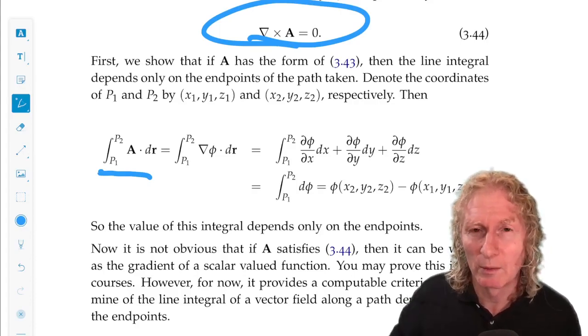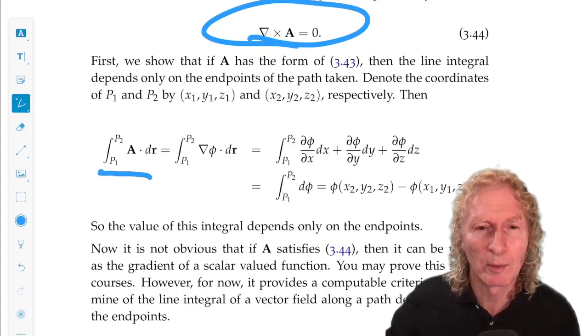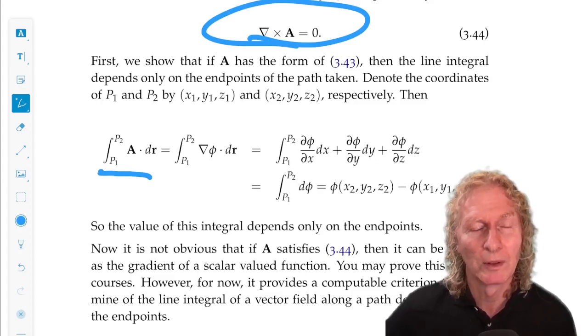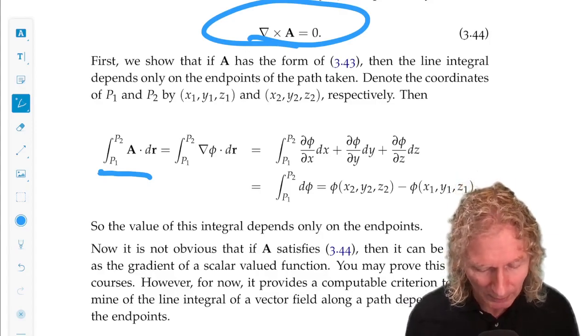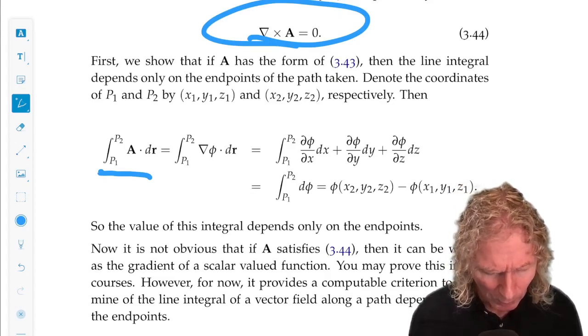And if you read what I said about the art of computing the line integrals, we need to be able to parameterize the path in a way that's consistent with A.dr, and we can do the integrals that result from that. But in this case, A is gradient of phi.